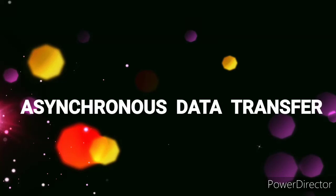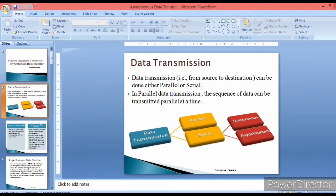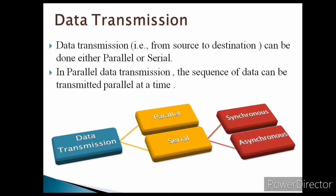In this video we are going to see about asynchronous data transfer. Before we move on to asynchronous data transfer, let us see about data transmission. Data transmission can be done either parallel or serial. In parallel data transmission, the sequence of data can be transmitted parallel at a time. In serial data transmission, data can be sent in sequence one at a time. Serial data transmission can be classified into synchronous data transfer and asynchronous data transfer.